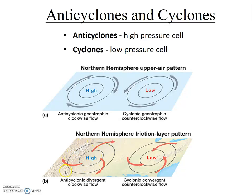There's still a clockwise nature to it, but the air is also diverging. In a low pressure cell, or cyclone, we have in the upper atmosphere simply the pressure gradient and the Coriolis effect, and they balance each other out, and we end up with counterclockwise geostrophic flow. In the lower atmosphere, friction plays a role. The Coriolis effect is reduced, and we have still counterclockwise flow, but now since the pressure gradient overwhelms the Coriolis effect, we have counterclockwise convergent flow.